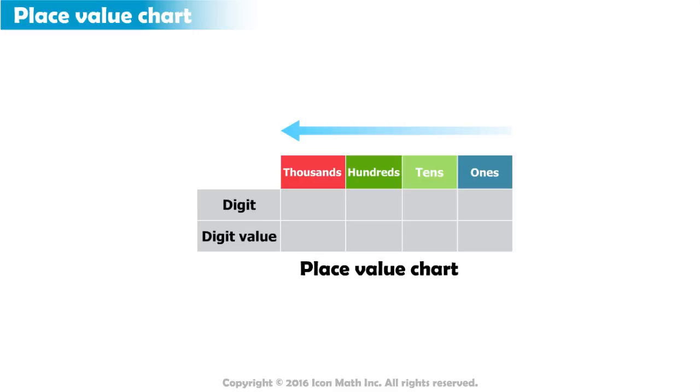For example, the number 2658 is a four-digit number. Let's put it in the place value chart.